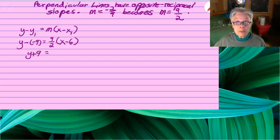So y plus 9 equals 9 over 2 times x minus 6. Now, to eliminate the fraction, multiply both sides of the equation by 2.